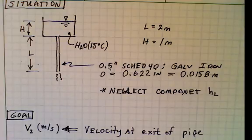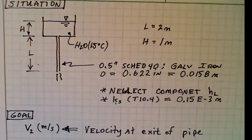The pipe is half-inch schedule 40. I looked up diameter and then converted that to SI units. The pipe is also galvanized iron, so I'm going to go to table 10-4 and look up the value of sand roughness height. The sand roughness height is 0.15 times 10 to the minus 3 meters.